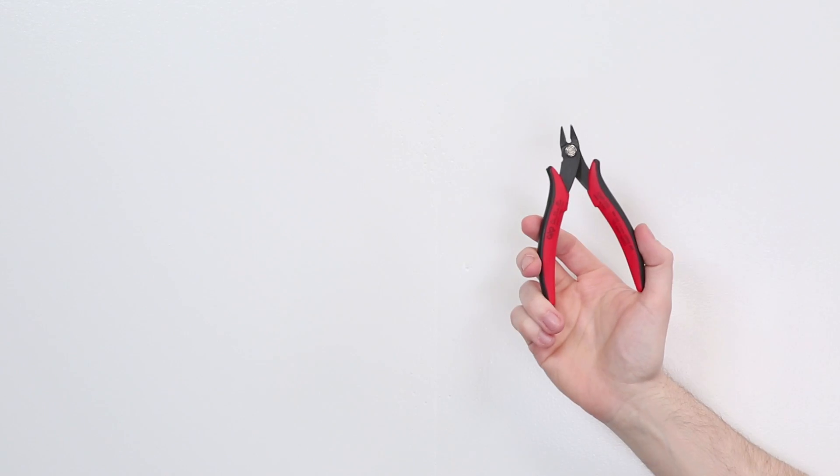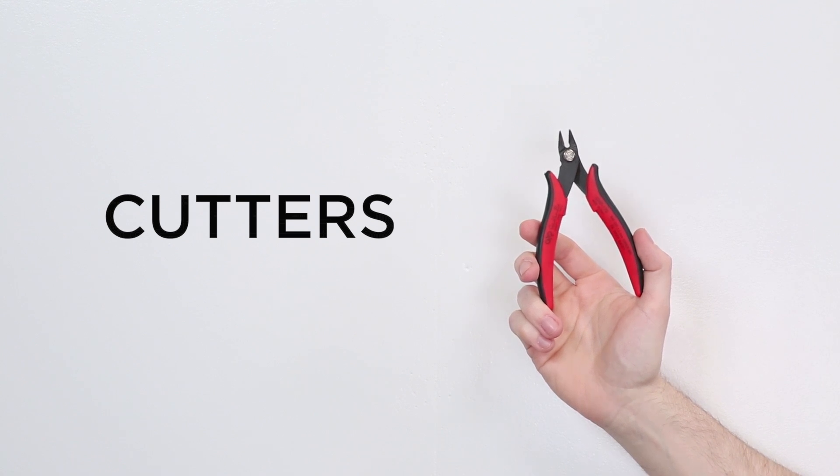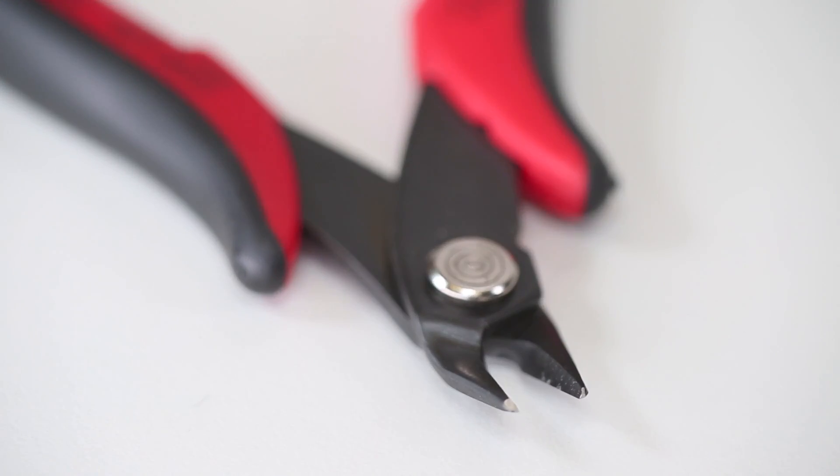After soldering each component, you'll need to trim leads with a pair of cutters. These are an indispensable part of the circuit board building process.